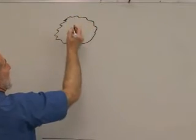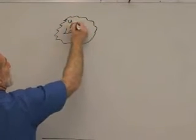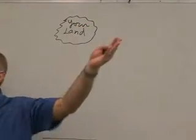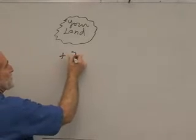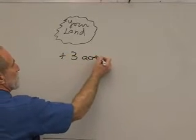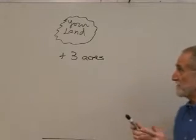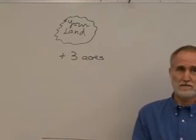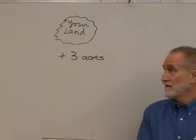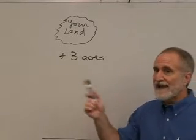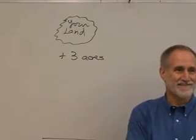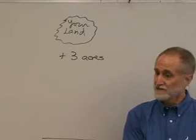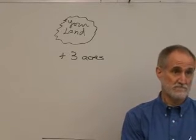Think of it like this. Let's say you have some land. This is your land. We don't know how much you have. It's just some amount. And let's say we give you three more acres than what you had before. Do you now have the same amount of land, more land, or less land than you did before? You have more land, don't you? In other words, I can't go around adding three to stuff and expect it to stay the same. Would everybody agree with that? Then my age is not the same as my age plus three.